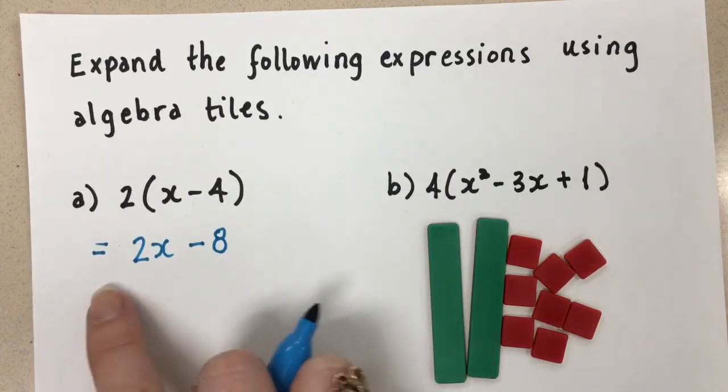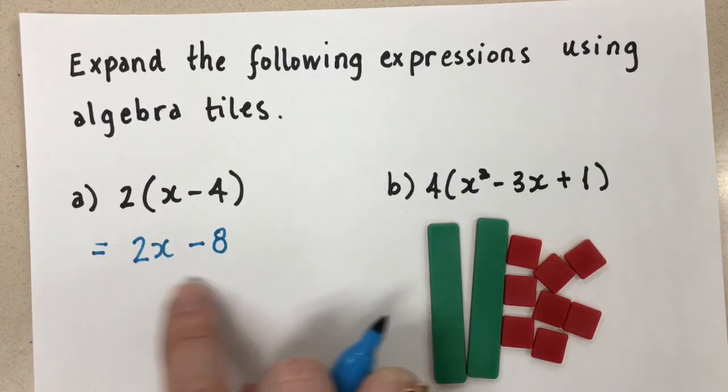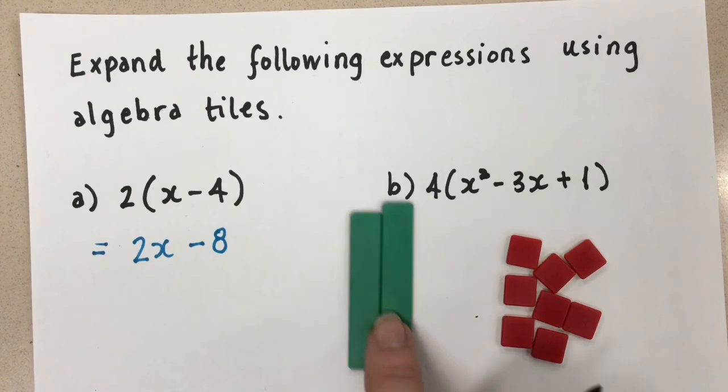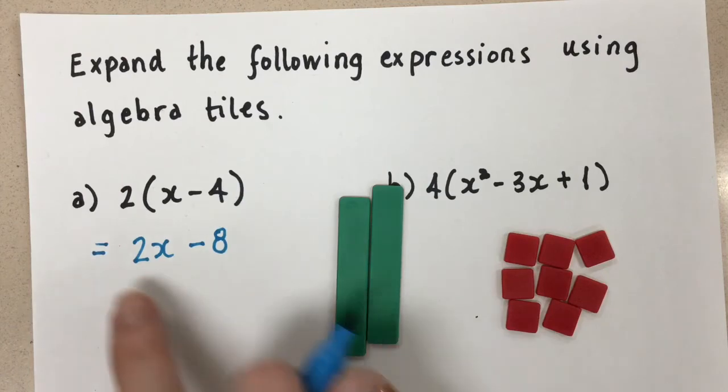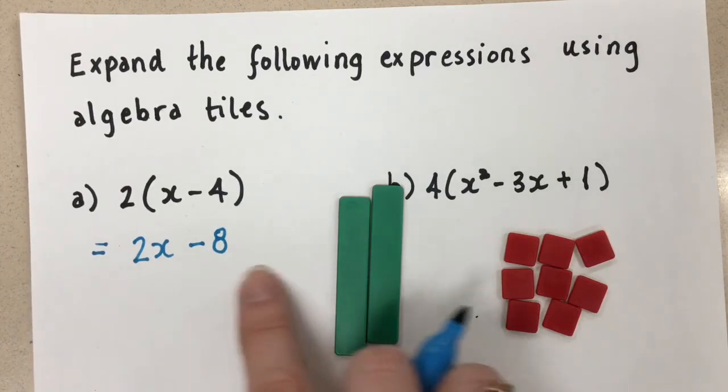And that's it. That's how we expand. We do not combine these together now because they are not like terms. We have the x terms and then the 1s. We can't combine those together. They're different terms. So that's our final solution there.